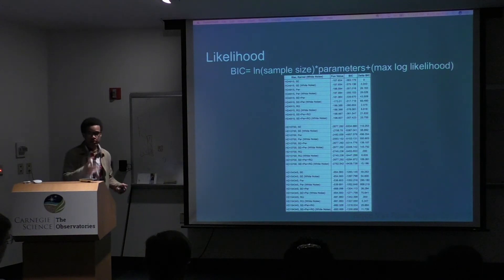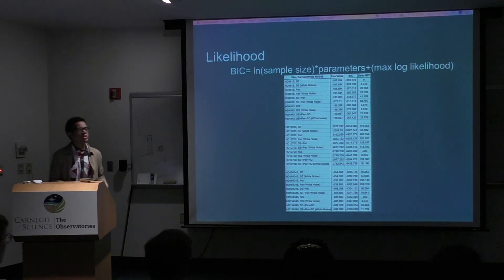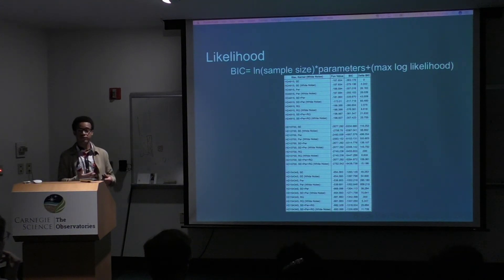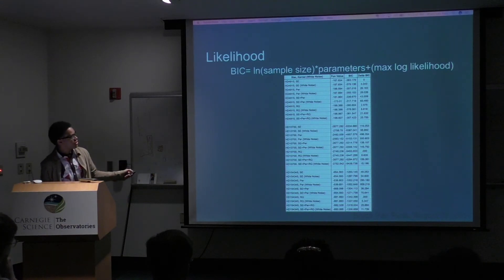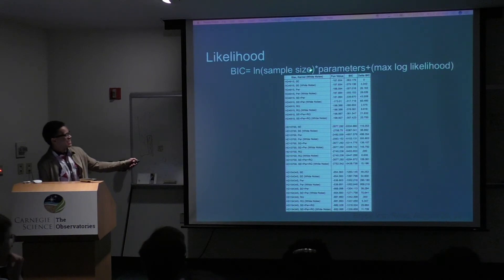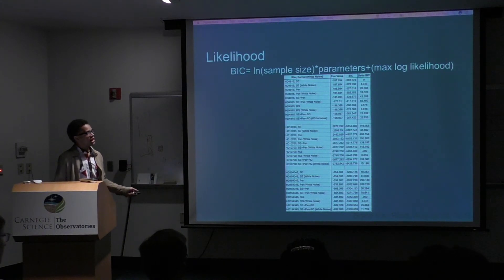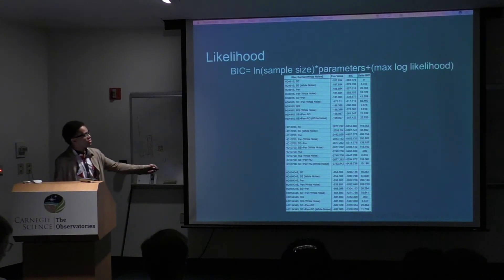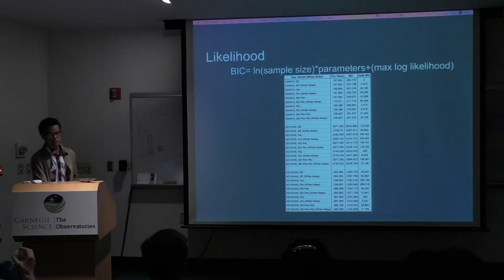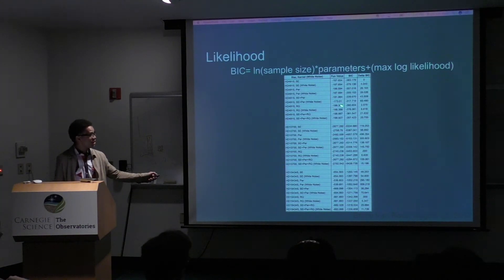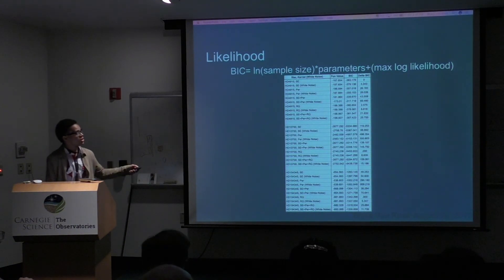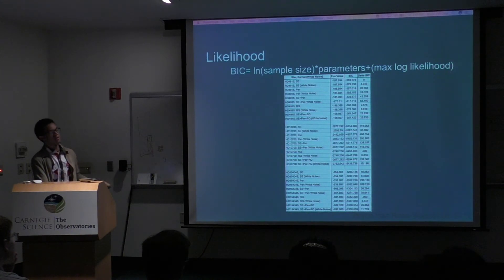By likelihood, I mean how probable it is that our choice of kernel and hyperparameters actually fits the data we give it. Our kernels are listed here with the three stars, with several different kernels including some concerning white noise. Our likelihood output came from the George package, and our BIC value is what we're analyzing with respect to the delta BIC. The BIC value takes into account the sample size, the number of hyperparameters, and the maximum log likelihood. We want a lower BIC value per star to determine that a given kernel fits the star best.